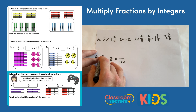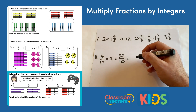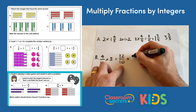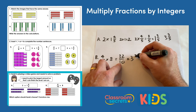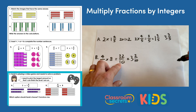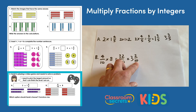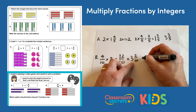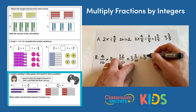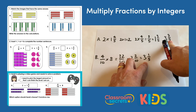For four tenths multiplied by eight, the result will be in tenths. Multiplying the integer by the numerator: four multiplied by eight is thirty-two tenths. Converting to a mixed number, we can use thirty of those tenths to make three wholes, with two tenths left over, giving three and two tenths. We can simplify two tenths by dividing numerator and denominator by two, giving one fifth, so the result is three and one fifth.